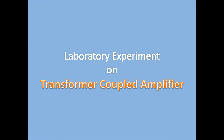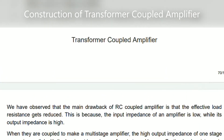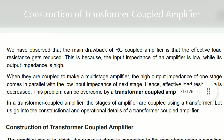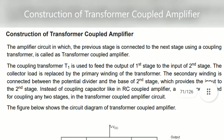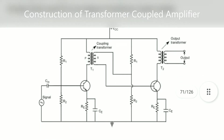Before going to the laboratory experiment, let us discuss the construction, working principle, advantages, disadvantages, and applications of a transformer coupled amplifier. So let's start with the construction of the transformer coupled amplifier. From the circuit diagram we can see there are two stages of amplifier.